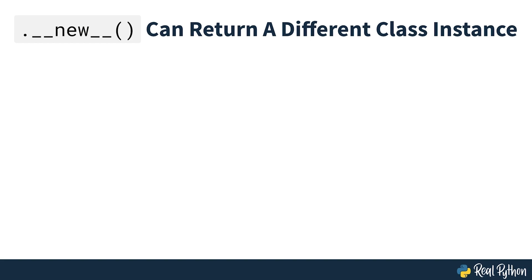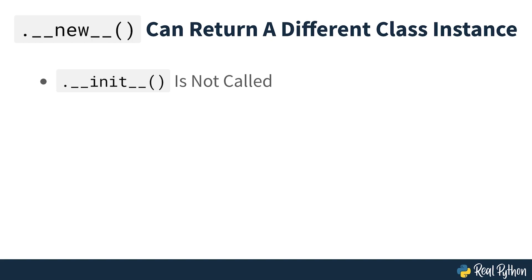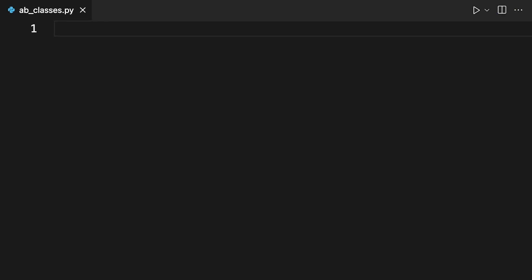Note that this code is intended to be a demonstration — it's not something you would typically do in real code. A subtle and important detail to note about the __new__ special method is that it can also return an instance of a class different from the class that implements the method itself. When that happens, Python doesn't call __init__ in the current class because there's no way to unambiguously know how to initialize an object of a different class. Next you'll see an example where the __new__ method of the B class returns an instance of the A class.